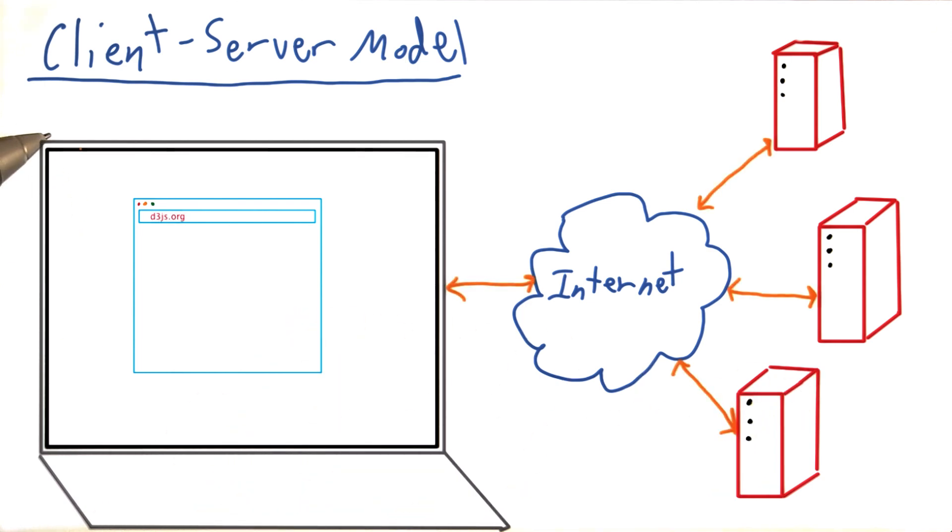Let's say, for example, that you want to go to the D3 home page, located at d3js.org, and load the index.html page.